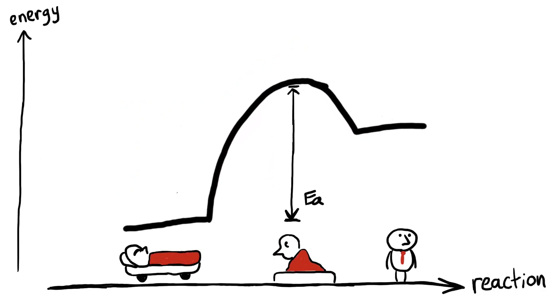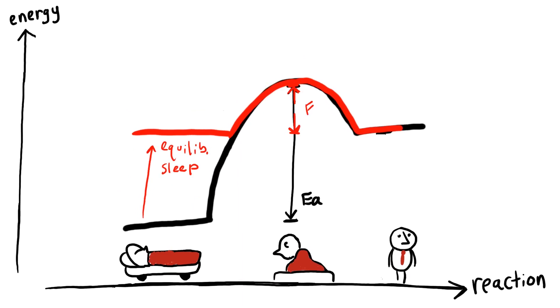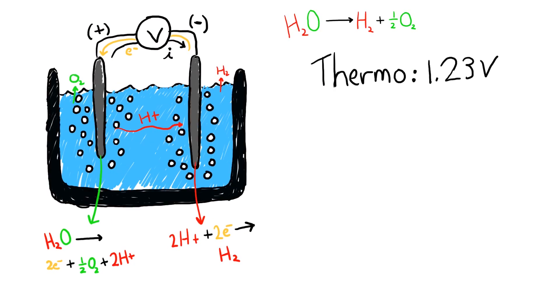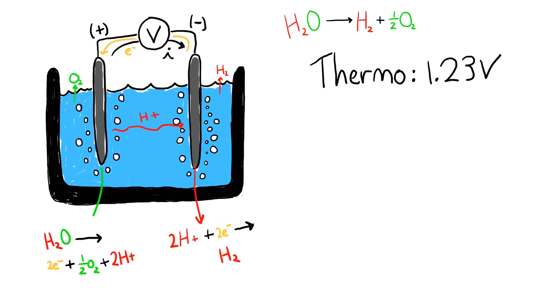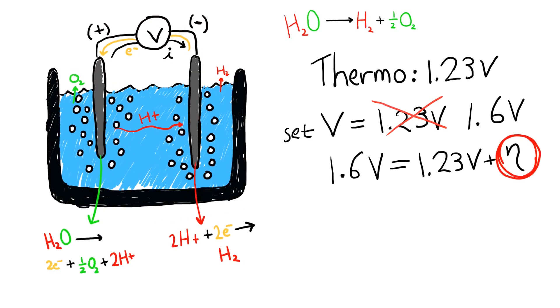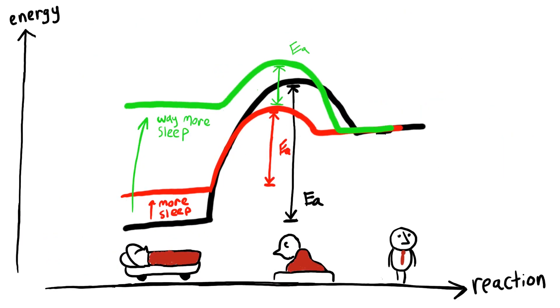Thermodynamics predicts that when the starting and ending energies are equal, you have equilibrium. This gives us the value of the expected potential, 1.23 volts. But even at this potential, we have a significant barrier. Needing to apply potential to produce an appreciable rate by shrinking this barrier is the overpotential. This is sort of how you always need to have more than eight hours of sleep to actually get a good night's rest.